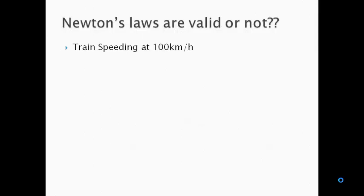The first one, train speeding at 100 km per hour. The train is speeding at 100 km per hour means it is moving at constant speed. So, it is inertial frame of reference. The laws are valid.